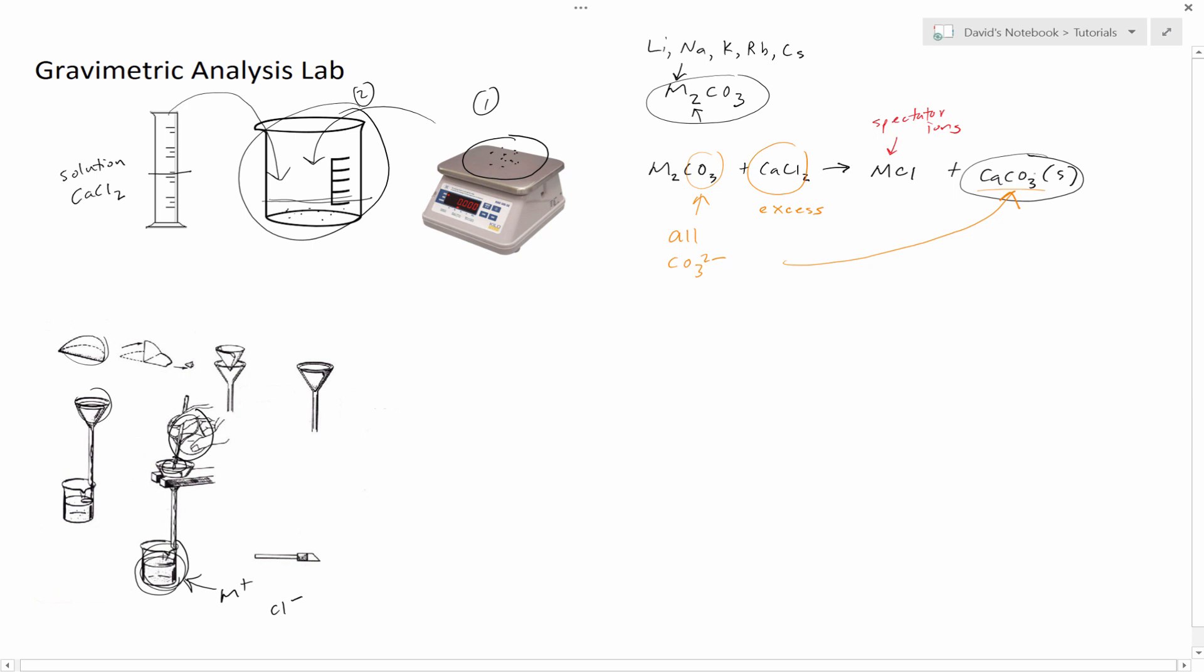If we get the mole amount of this, and we weighed this at the beginning from step one, then all we have to do is get the mole of this. We can use stoichiometry and get the mole of this.